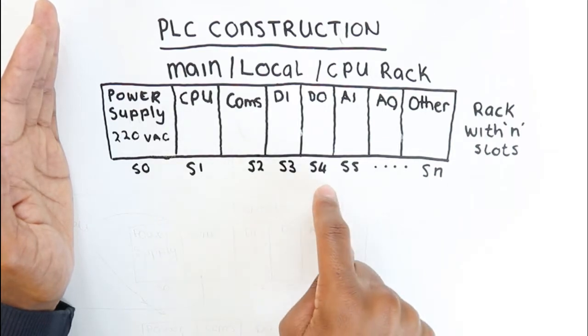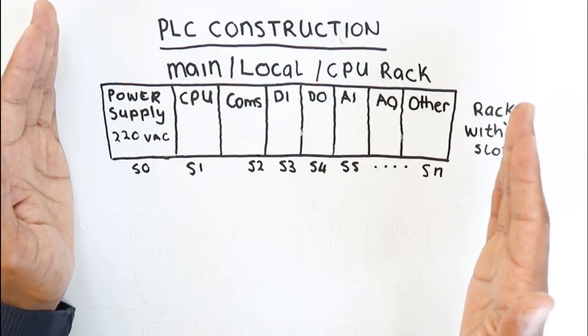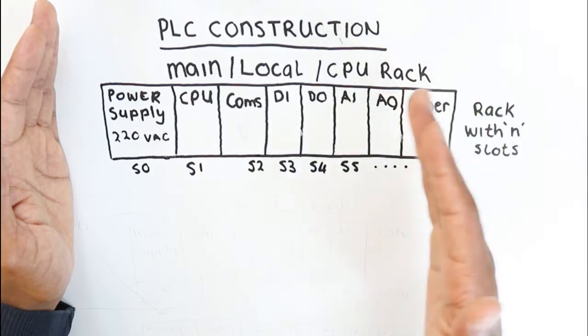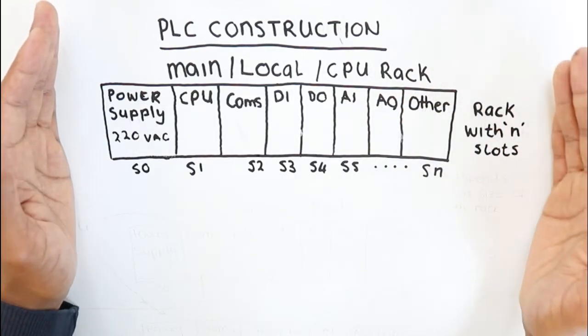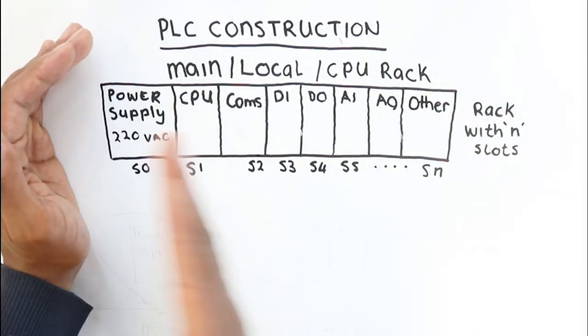Up to the last, up to n slots, which is dependent on the number of slots that that particular CPU rack will have. The slots, that's where you would then slot in your PLC cards.